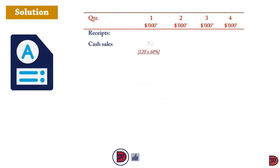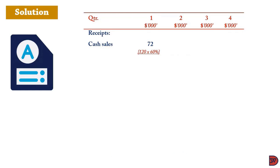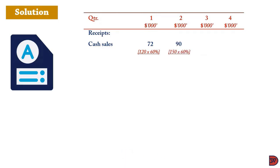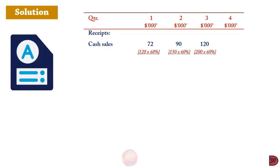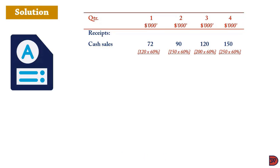For receipts, we start with cash sales: 72,000 for Q1, which is 60% of 120,000. For Q2 it is 90,000 — 60% of 150,000. For Q3 it is 120,000 — 60% of 200,000. For Q4 it is 150,000 — 60% of 250,000.